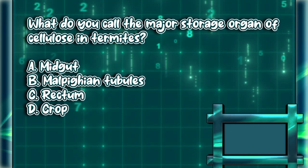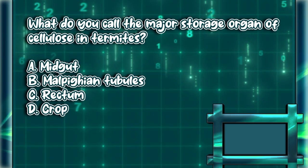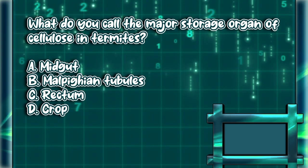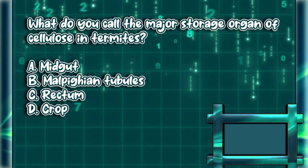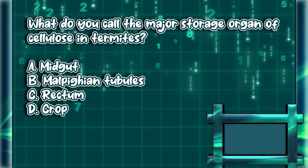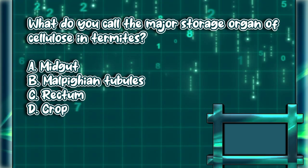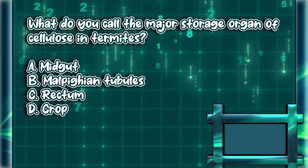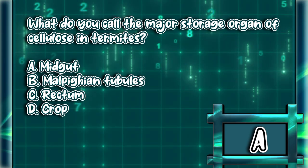What do you call the major storage organ of cellulose in termites? a) midgut, b) Malpighian tubules, c) rectum, d) crop. The answer is letter A.